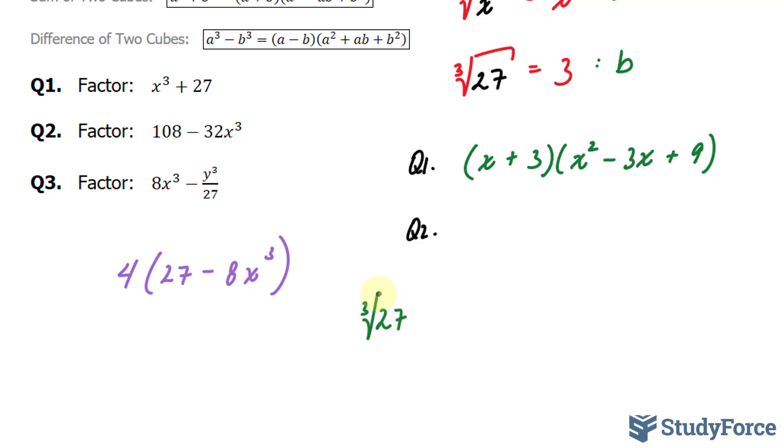Now let's do the test to see if 27 and 8 are perfect cubes. Starting with 27, the cube root of 27, as discovered in the previous question, is equal to 3. And the cube root of 8x to the power of 3 is 2x. So now both of these terms are perfect cubes.